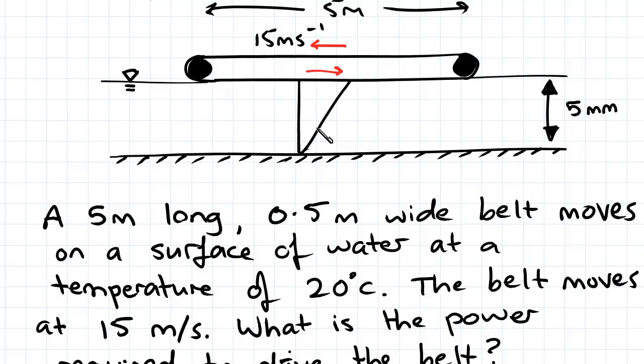So the velocity profile of the fluid will be a straight line like that. So at the bottom the fluid doesn't move and at the top it moves at a speed of 15 meters per second, and that is in accordance with the no-slip theory.